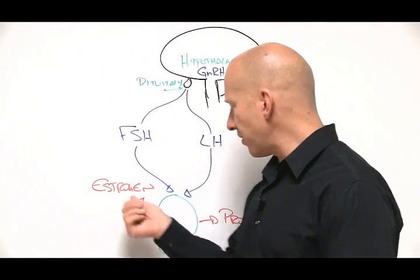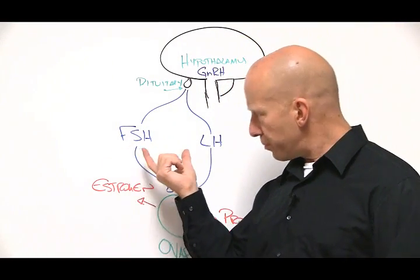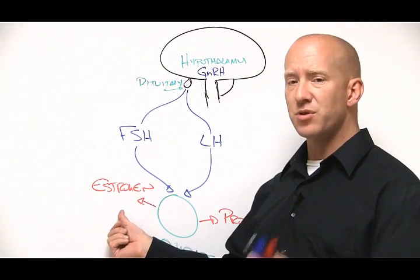FSH then tells the ovaries basically to make estrogen. So the first half of the month is mostly predominant by FSH, follicle-stimulating hormone, and estrogen production.